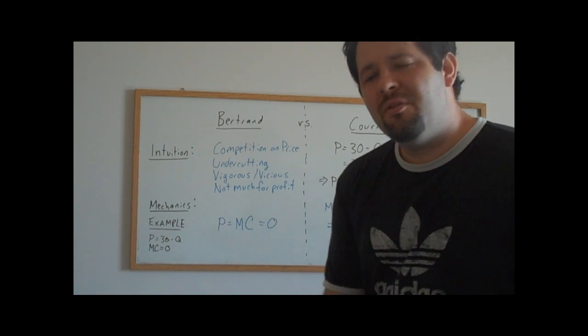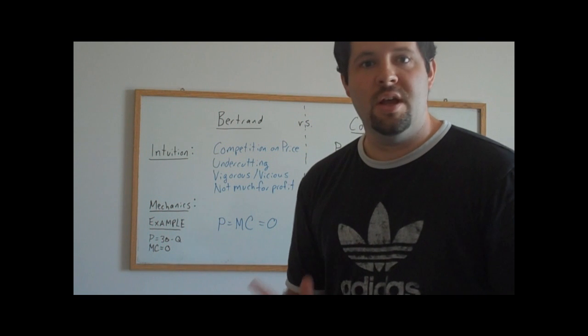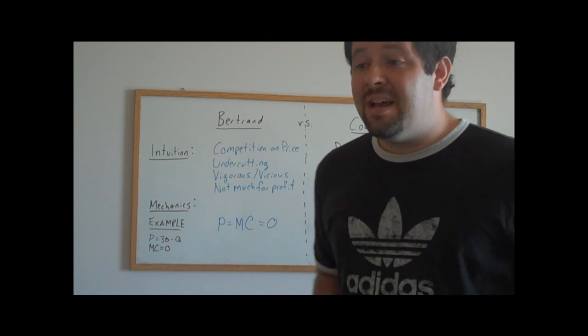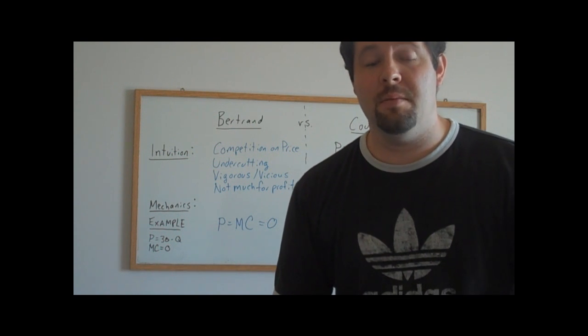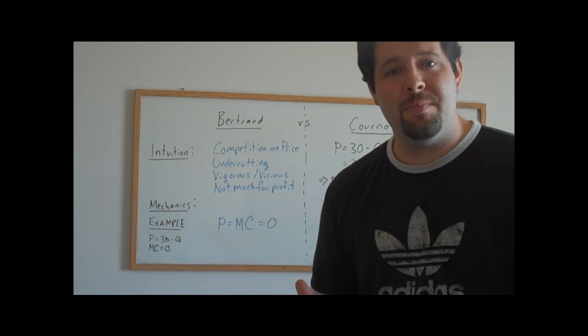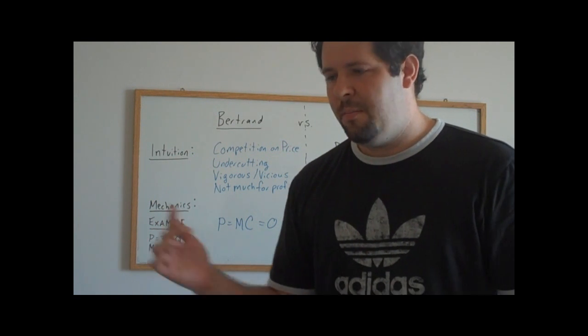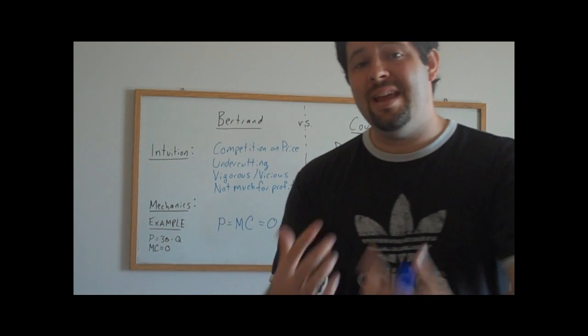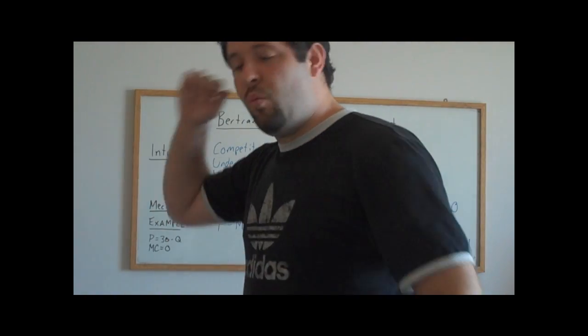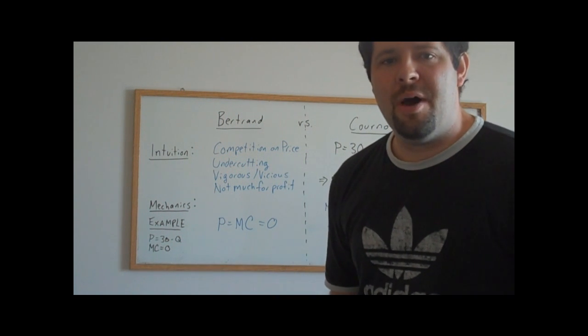The first mover in the Stackelberg game can reason through what firm two is going to do in response to his capacity choice. Because he can reason through what firm two is going to do in response to him, he can sort of anticipate what quantity firm two is going to pick. And more than just anticipate, by picking his capacity, he can dictate what firm two is going to do, so there's not going to be any uncertainty about what's going to happen.